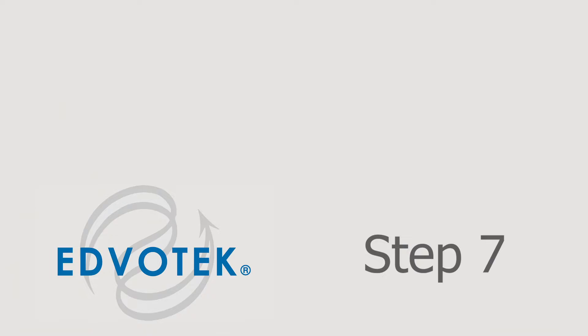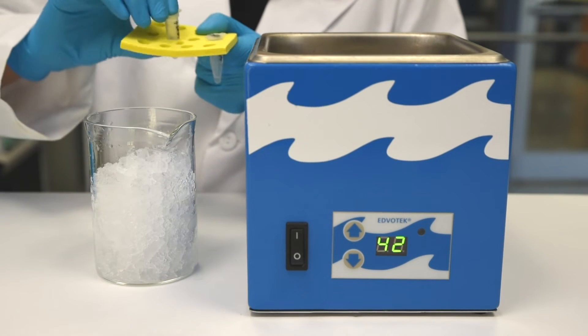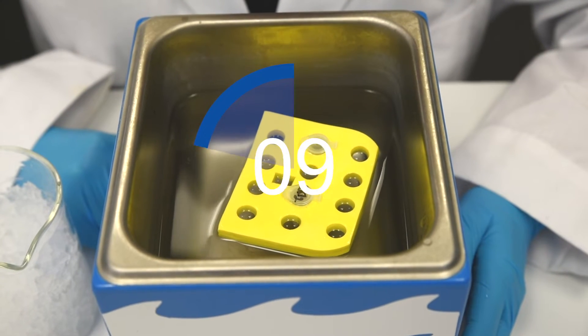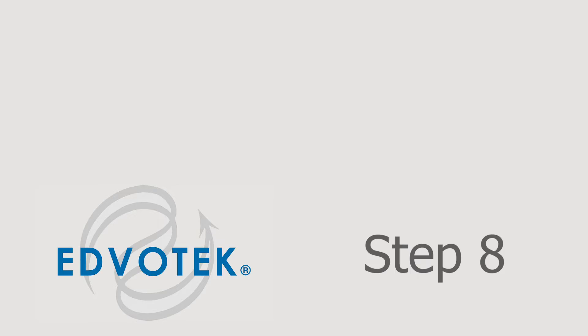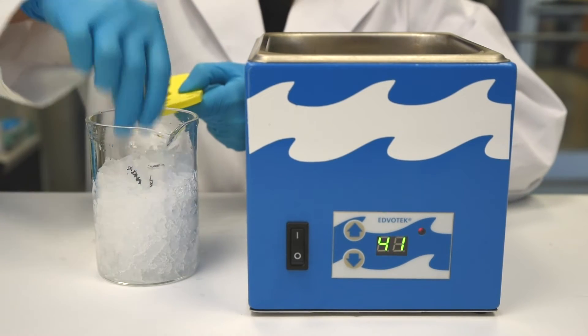Step 7. Float both transformation tubes in a 42 degrees Celsius water bath for exactly 45 seconds. Step 8. Immediately return the tubes to the ice bucket and incubate for two minutes.